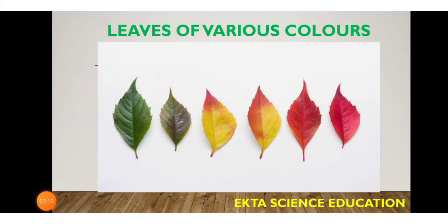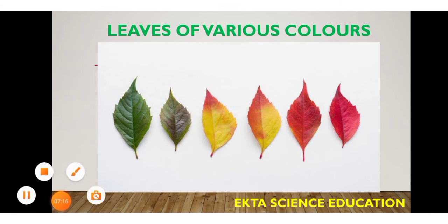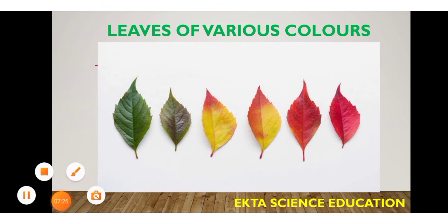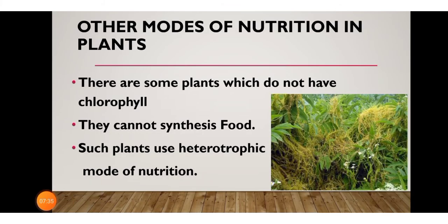We see leaves of various colors in ornamental plants — greenish, yellowish, yellow, brown, or orange — though green is the most common. These different colors are due to different types of chloroplast pigments that create different color shades in plant leaves.